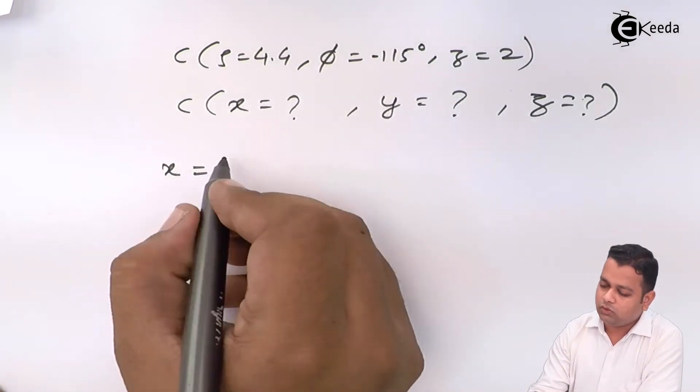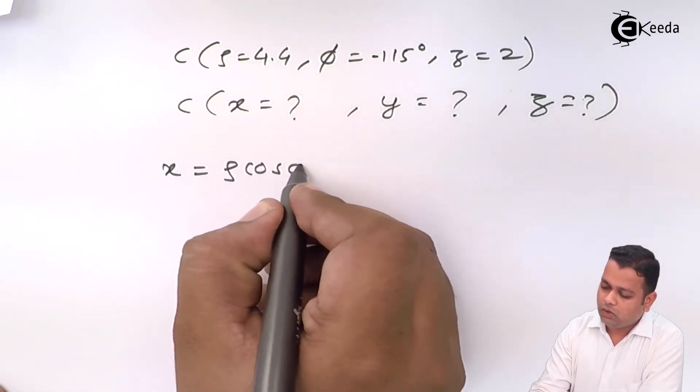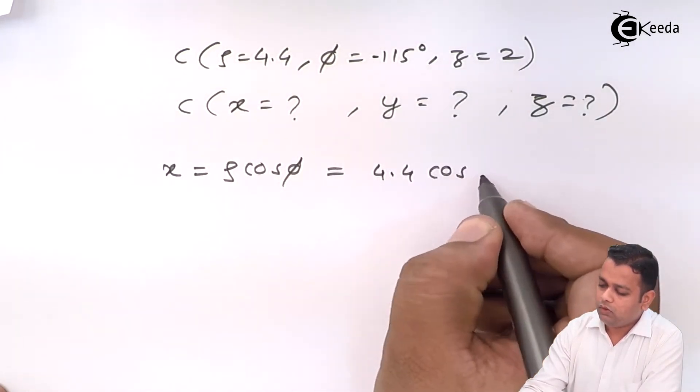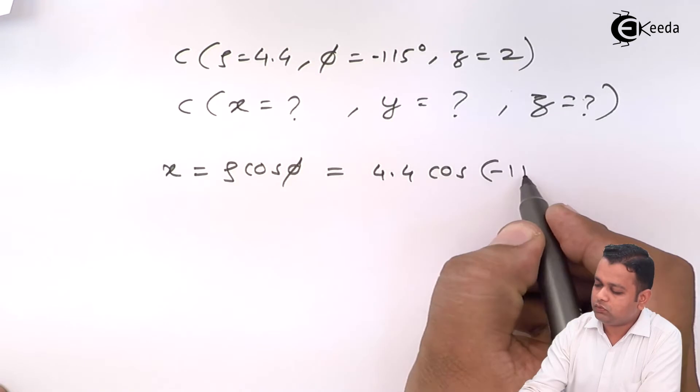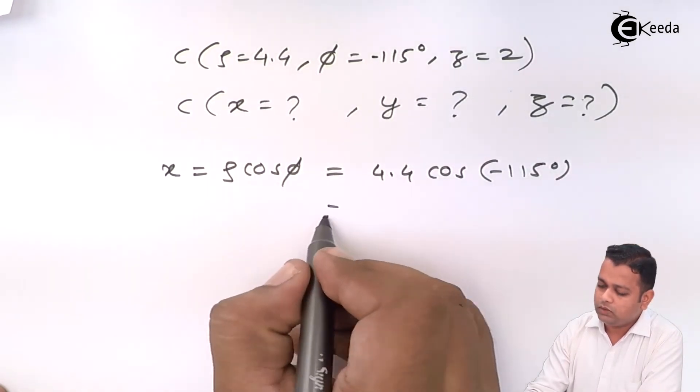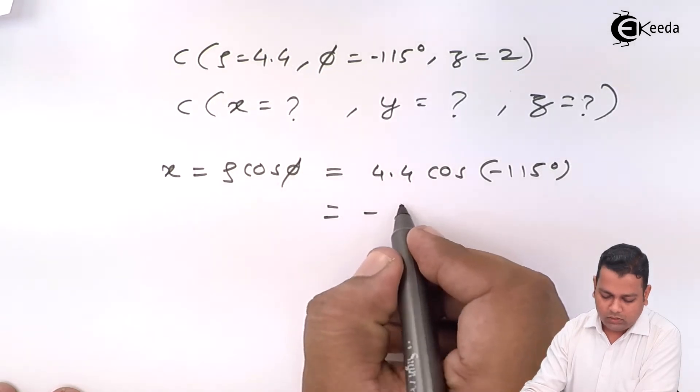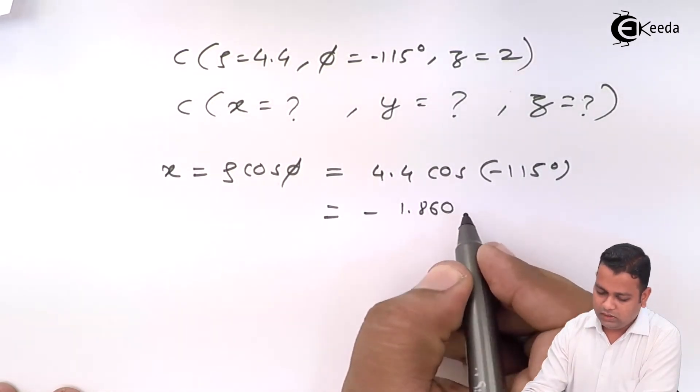we have x is equal to rho cos phi. So, rho is equal to 4.4, cos phi is minus 115 degrees. This will give us x is equal to minus 1.860.